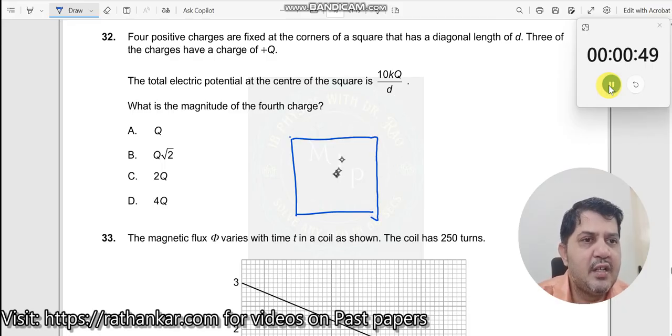So like this, of diagonal of length d. This diagonal length is d. Three of the charges have a charge plus q. So this is plus q, this is plus q, this is plus q. I do not know what is this charge q dash.